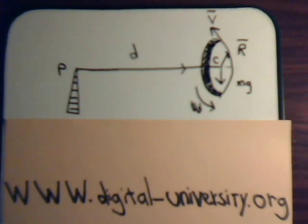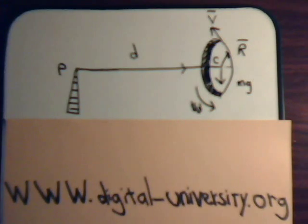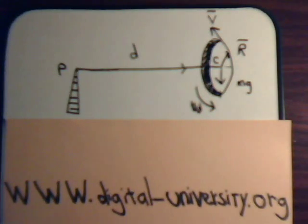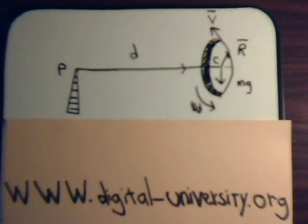In this video we want to discuss in very simple terms the phenomenon of precession and the principles of what makes a gyroscope work. For this video we're going to rely heavily on what we did in the three previous videos in our series on analytical mechanics: videos number 26, 27, and especially video number 28. The video playlist is at the website digital-university.org.